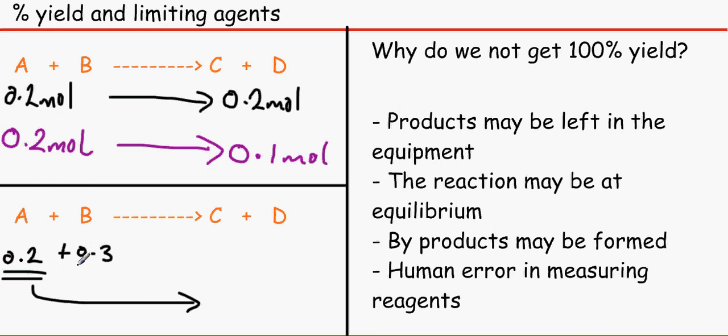We can't react 0.3 moles with 0.2. So say for example this is our limiting reagent. If you remember in F325, a limiting reagent is a substance in a chemical reaction that runs out first. So before we even finish 0.3, we would have already finished 0.2.